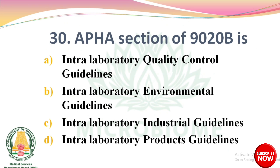Next question: APHA Section 1020B is — options: Intralaboratory Quality Control Guidelines, Intralaboratory Environmental Guidelines, Intralaboratory Industrial Guidelines, Intralaboratory Products Guidelines. The right answer is option A: Intralaboratory Quality Control Guidelines.